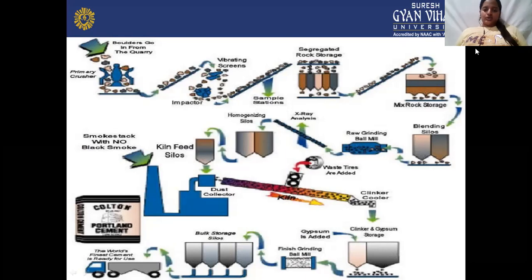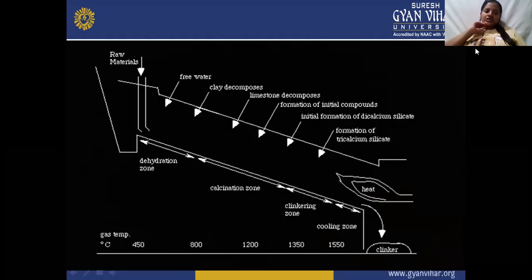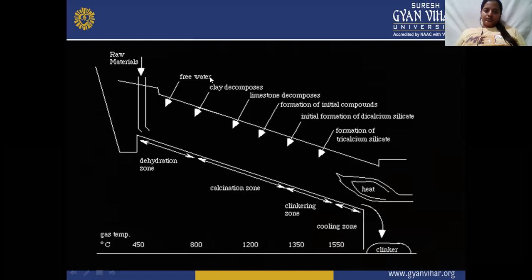This is the whole picture of how Portland Cement is produced. The raw material is fed through the kiln chamber, which has several zones where free water evaporates, clay decomposes, and every raw material passing through each stage undergoes a different process.